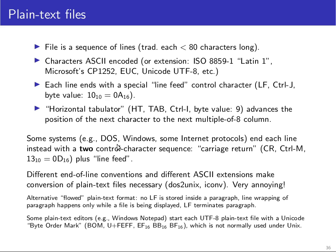On some systems — most notably MS-DOS, Windows, and also quite a number of internet protocols such as HTTP — each line ends not with a single character but with a two-character control sequence: first the carriage return character, which you can type with CTRL-M, hexadecimal 0D or decimal 13. You may want to remember these numbers because they will often haunt you, and it is good to be able to recognize them in hex dumps.